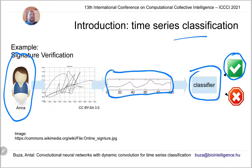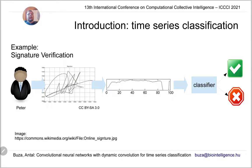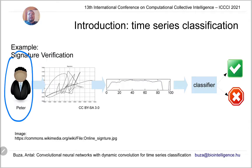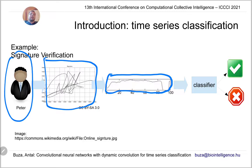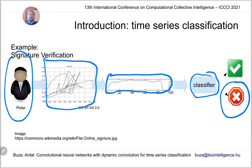However, it may happen that some other person tries to log into the system. For example, here is a user called Peter. While he tries to log in, he is also asked to write Anna's signature on the touch screen. Peter was successful in producing a signature which visually looks similar to Anna's, but the dynamics of this signature is substantially different. That is, this time series of velocities looks substantially different, and because of this, the classifier would say this signature was most likely not written by Anna, so we would not allow this user to access the system.